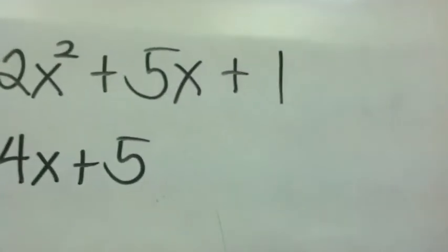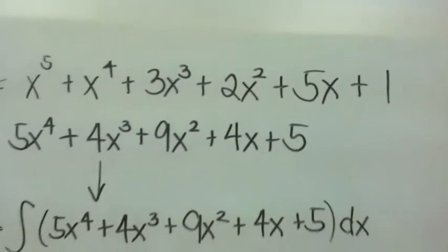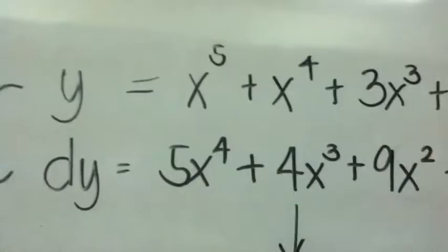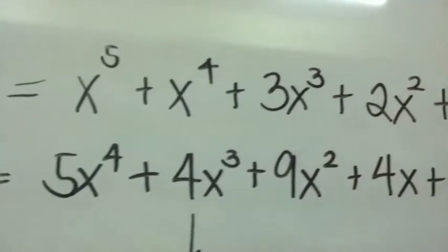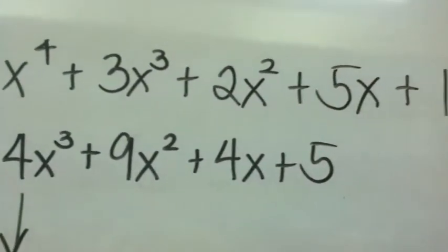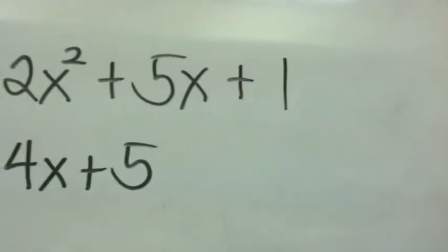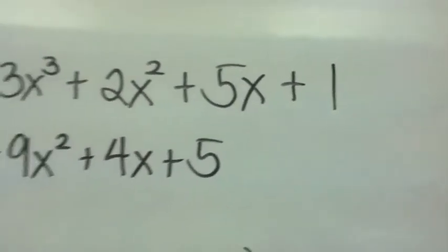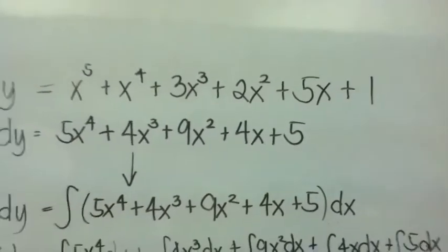Integration is the opposite process of finding the derivative. So we know already that the integral of this new polynomial is x to the 5th plus x to the 4th plus 3x cubed plus 2x squared plus 5x plus 1. But is this its only integral?